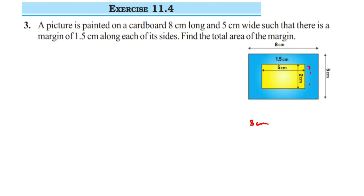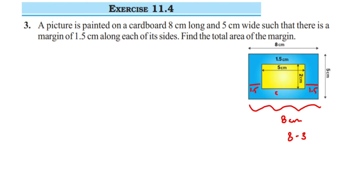The same thing we do for the length of the picture. Since the whole length is 8 centimeter and we know the 1.5 centimeter margin is left on both sides — left and right — so 1.5 plus 1.5 is 3, and 8 minus 3 is 5. So the length of the picture will become 5 centimeter. This is how we got the dimensions of the picture.